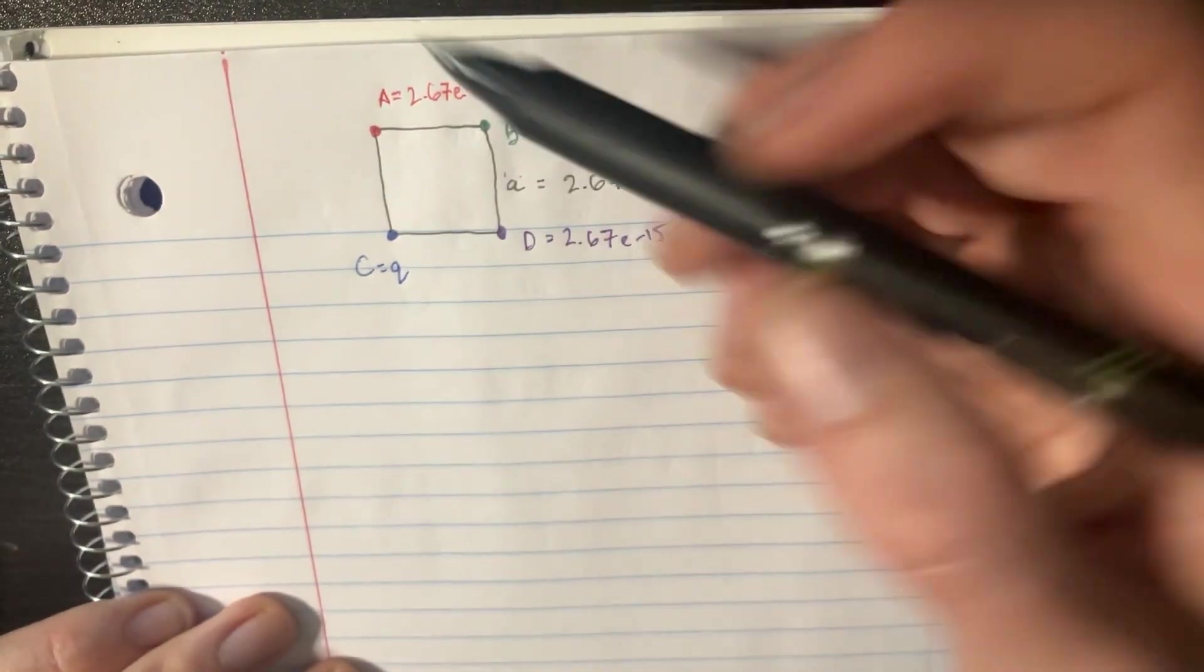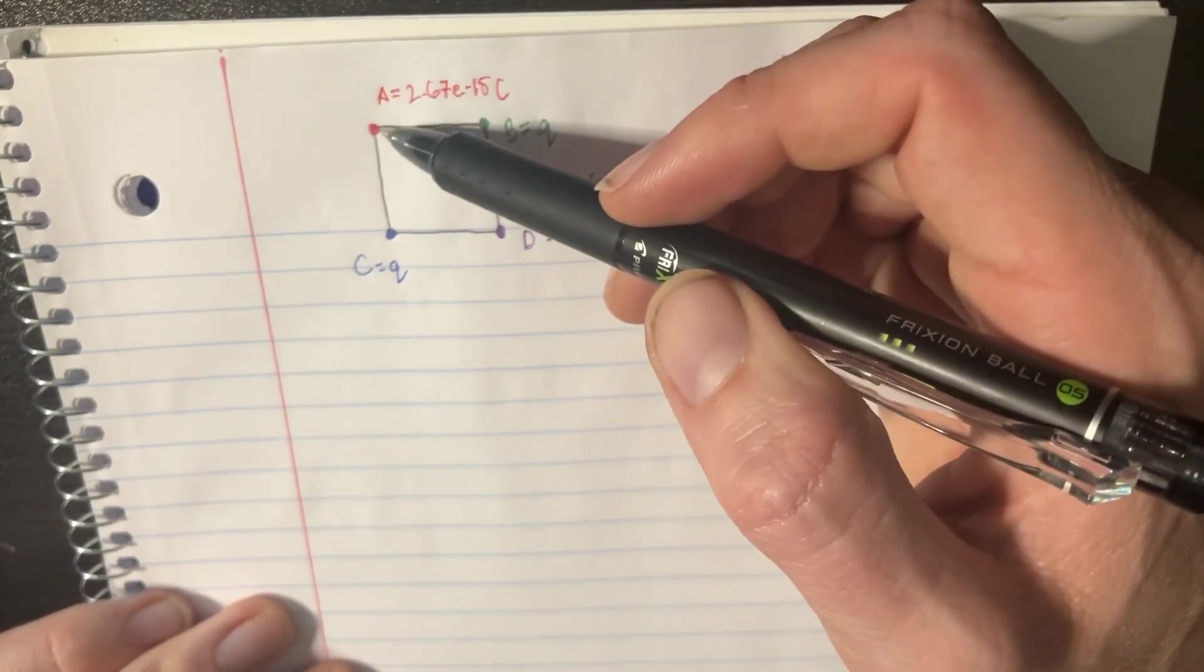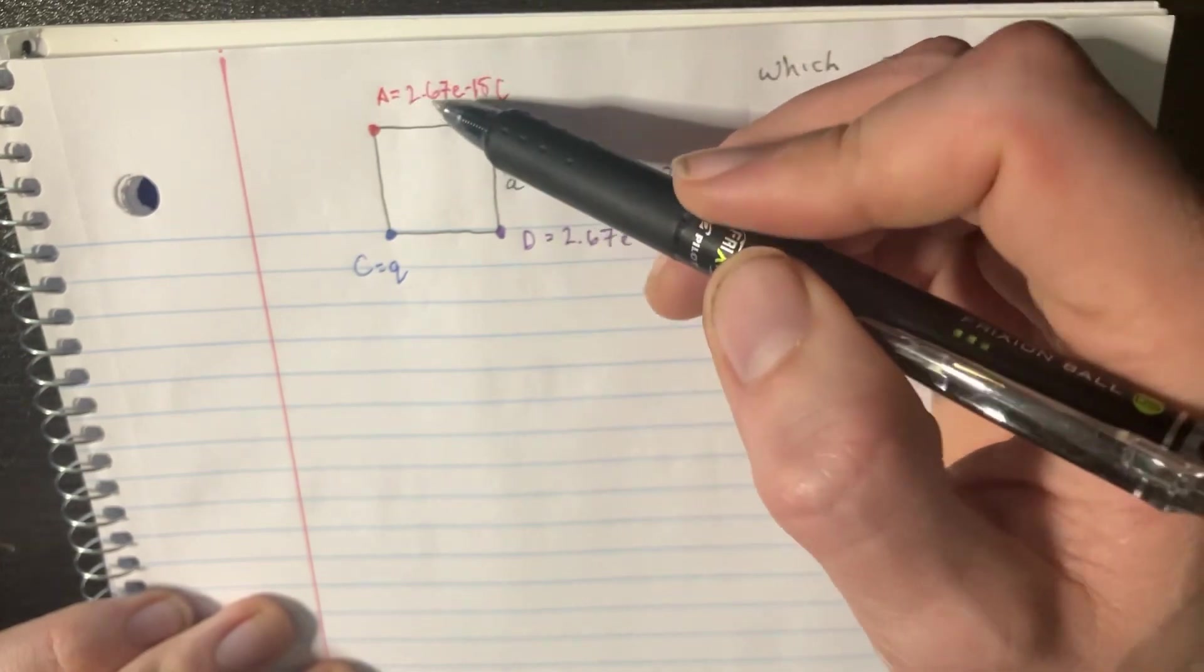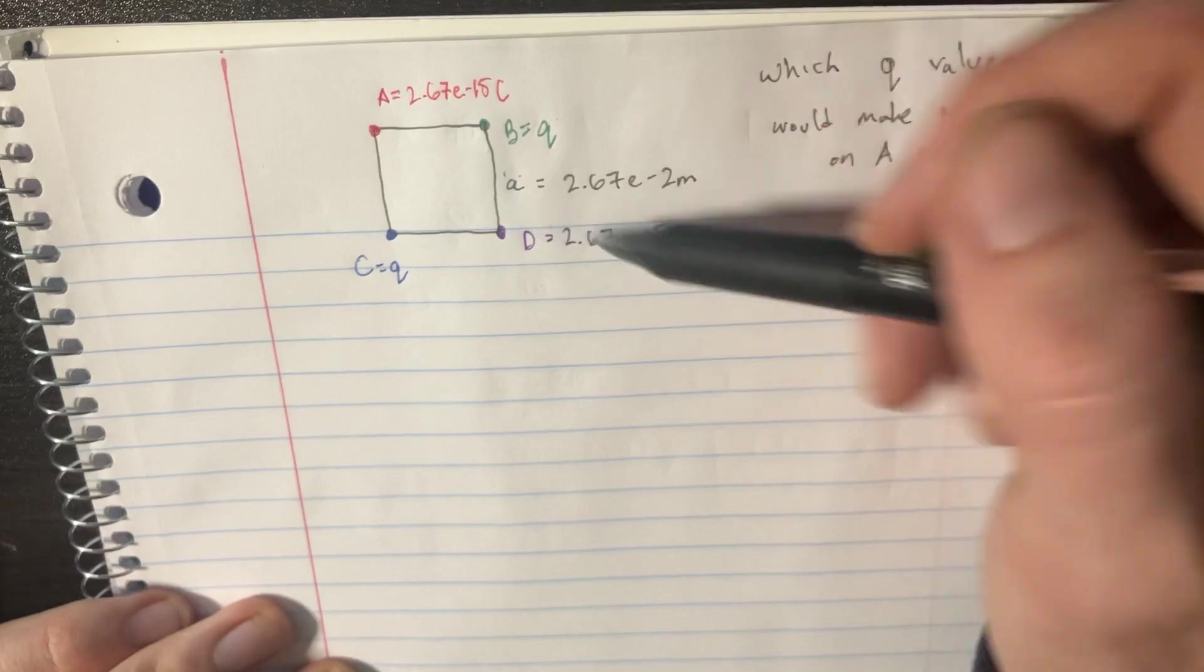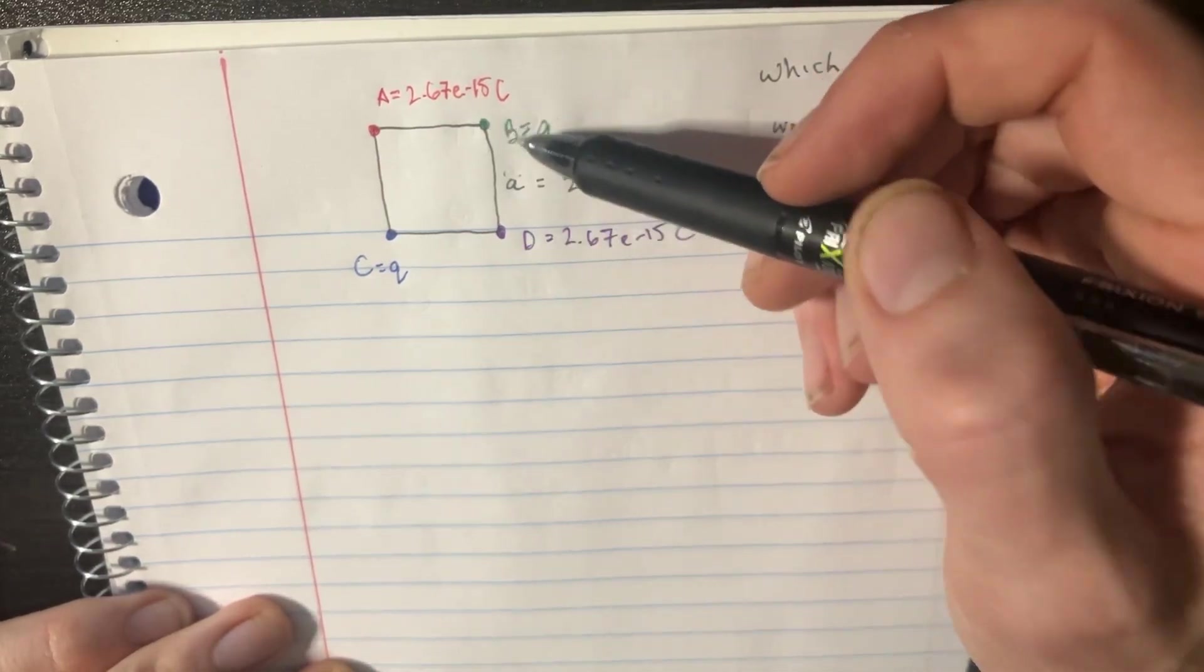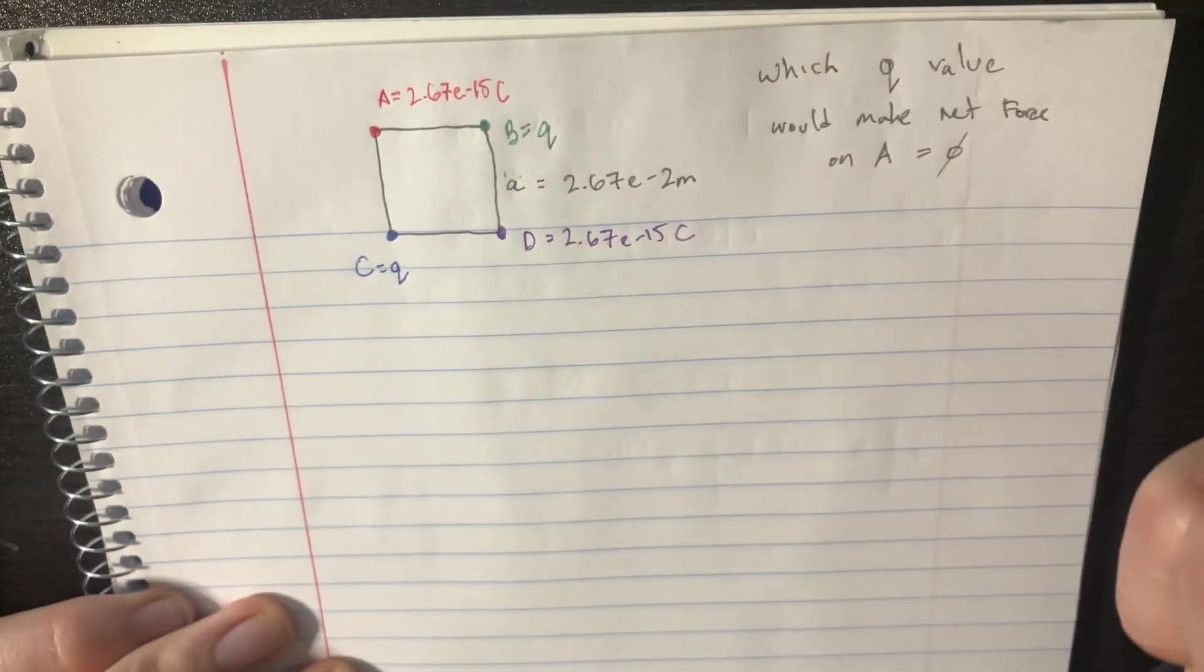and on these corners we've got these particles. So this is particle A, and it's got 2.67 times 10 to the negative 15 coulombs, same thing with D. And then this particle has a charge of Q, and that particle has a charge of Q.